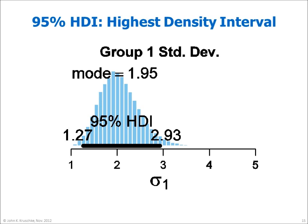The total probability of points within the HDI is 95%. The 95% HDI is a useful summary of where the most credible values fall. But we can also use the HDI to convert the continuous posterior distribution to a discrete decision. Points outside the HDI may be deemed not credible.